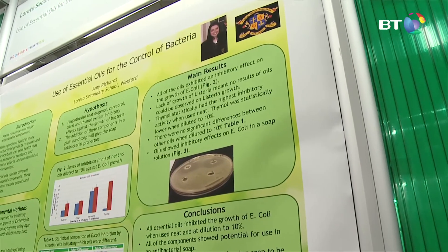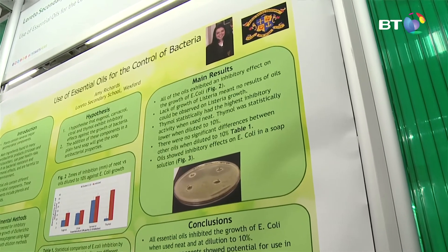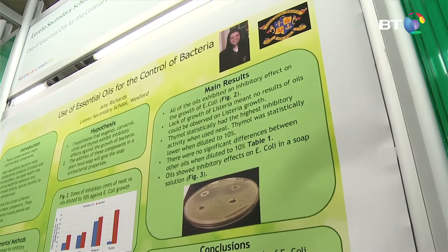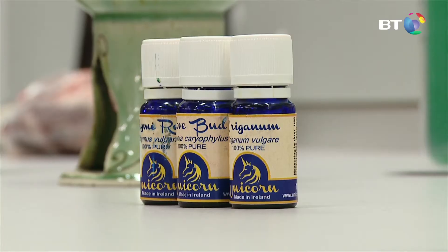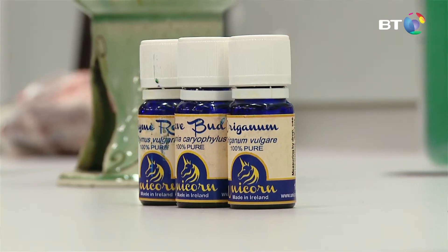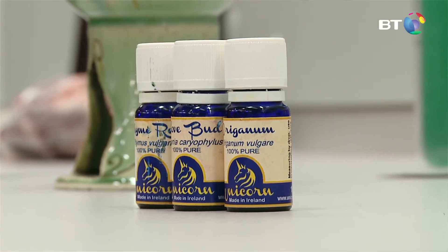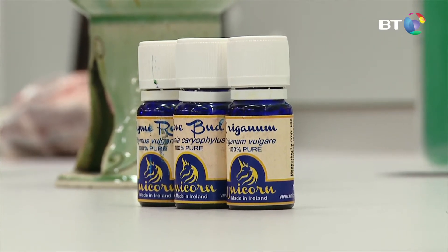I found that all of the components showed inhibitory effects on the growth of E. coli. Unfortunately, my Listeria didn't really grow once I put them in the plates, although it did grow in my broth.